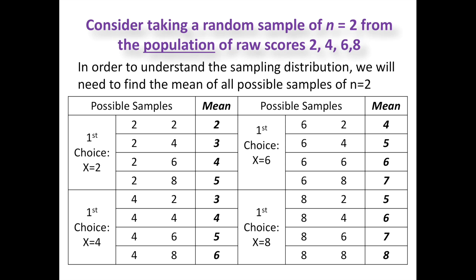We're going to take into consideration all the random sampling of 2 for the population of raw scores 2, 4, 6, and 8. If the first choice is 2, you can pair it with 2, 4, 6, or 8, giving means of 2, 3, 4, and 5 respectively. If the first choice is 4, you can pair it with 2, 4, 6, or 8. Same thing if first choice is 6 or 8 — you get all possible pairings through 8 and 8.